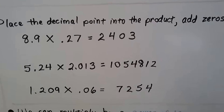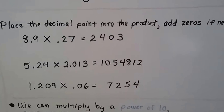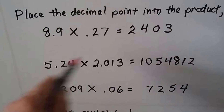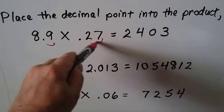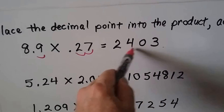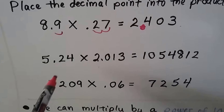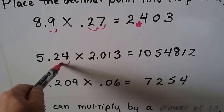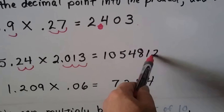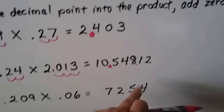In the skill focus, it's going to tell you to place the decimal point into the product and add zeros if needed. As said before, you just count the hops. So if this is the equation, how many hops do we have? We've got one, two, three — so we start from the right and go one, two, three, placing the decimal there. For another example with five hops, we start and count one, two, three, four, five, placing the decimal point right there.